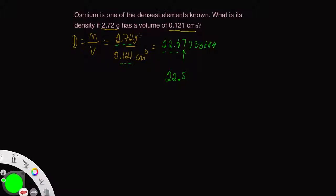Now we got the number. Let's think about the units. We have grams in the numerator and cubic centimeters in the denominator. So the units are grams per cubic centimeter.